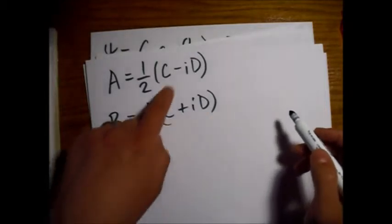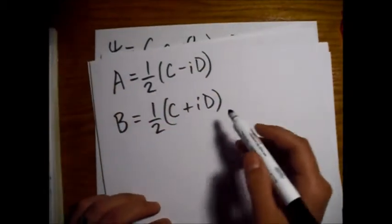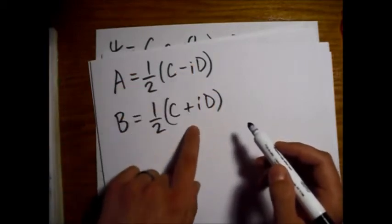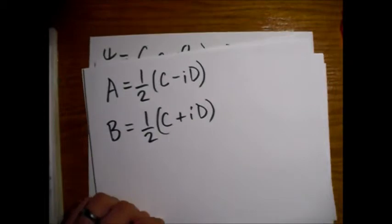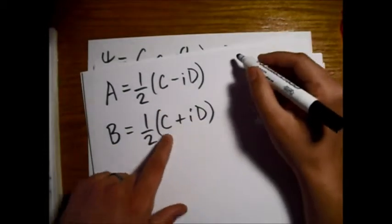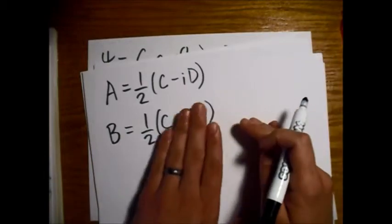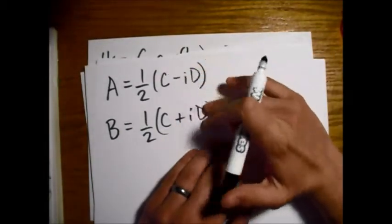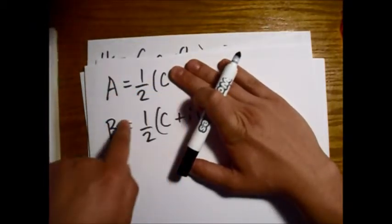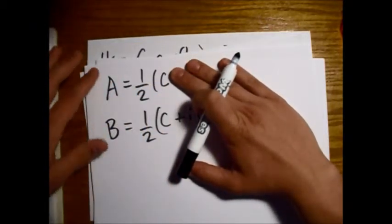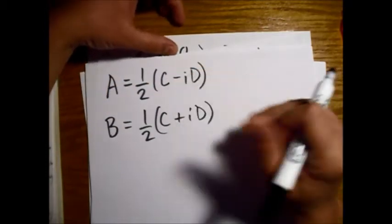Now, to get C and D in terms of A and B, we're just going to add these equations together and subtract them, kind of like what we did before. So, if we add them, add the two together, this term will go away because of the opposite signs. And we get A plus B equals one half C plus one half C, so C equals A plus B.